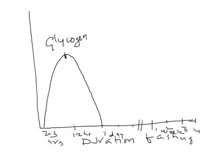Whenever we get into fasting, there are hormonal changes: insulin level decreases and glucagon level increases. The increase in glucagon brings a catabolic state, and we break all our reserves. The first reserve broken down by glucagon-mediated action is glycogen. Glycogen is broken down into glucose-1-phosphate by glycogen phosphorylase enzyme, and further broken down by the de-branching enzyme.